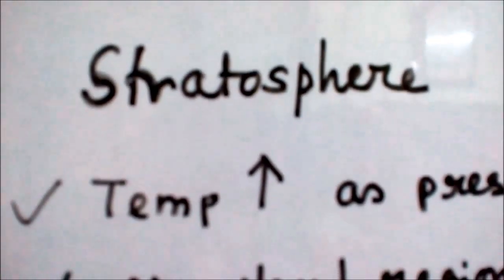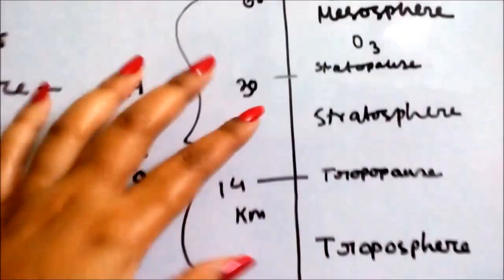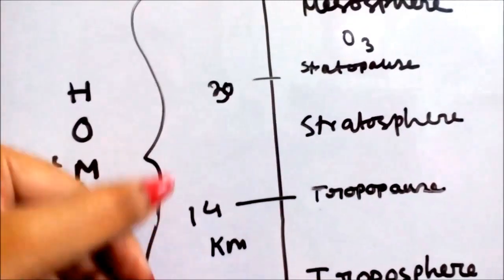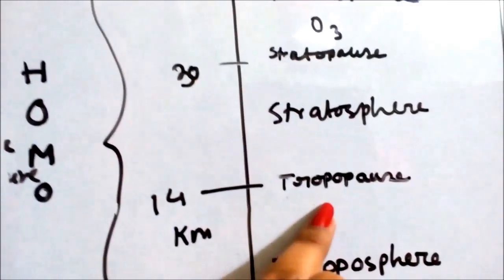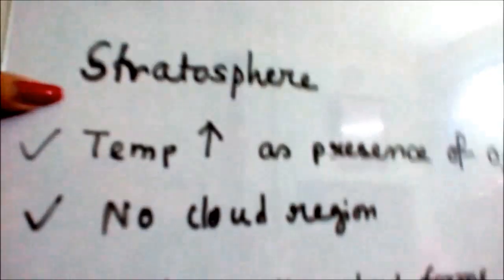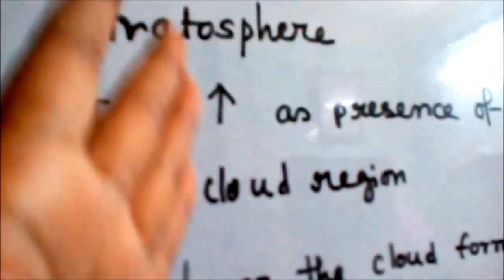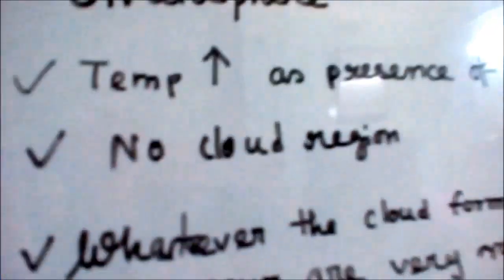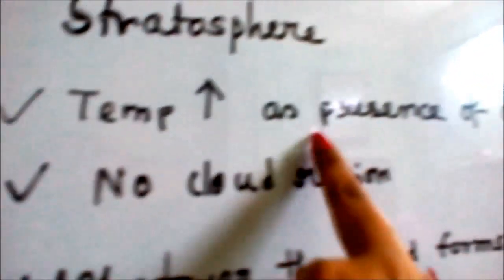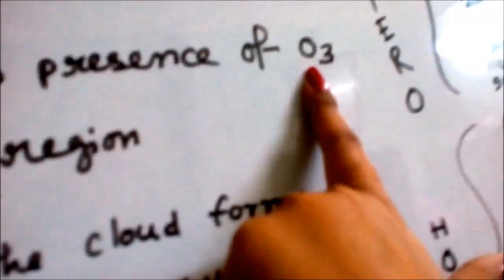The next layer is the stratosphere. This is the next layer in the vertical layer structure, extending from about 14 to 13 km above the tropopause. The characteristics of the stratosphere include the fact that temperature again starts to increase due to the presence of ozone — the ozone layer.